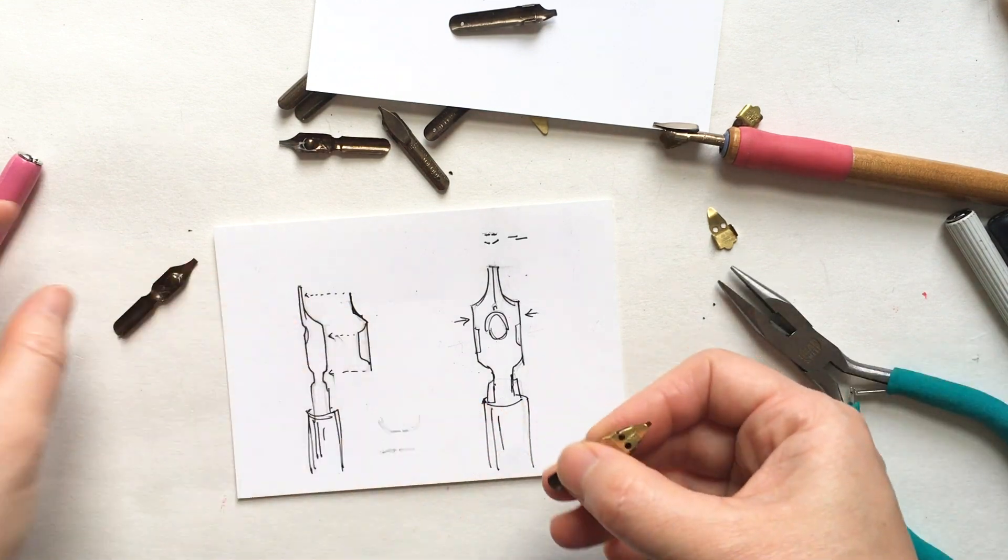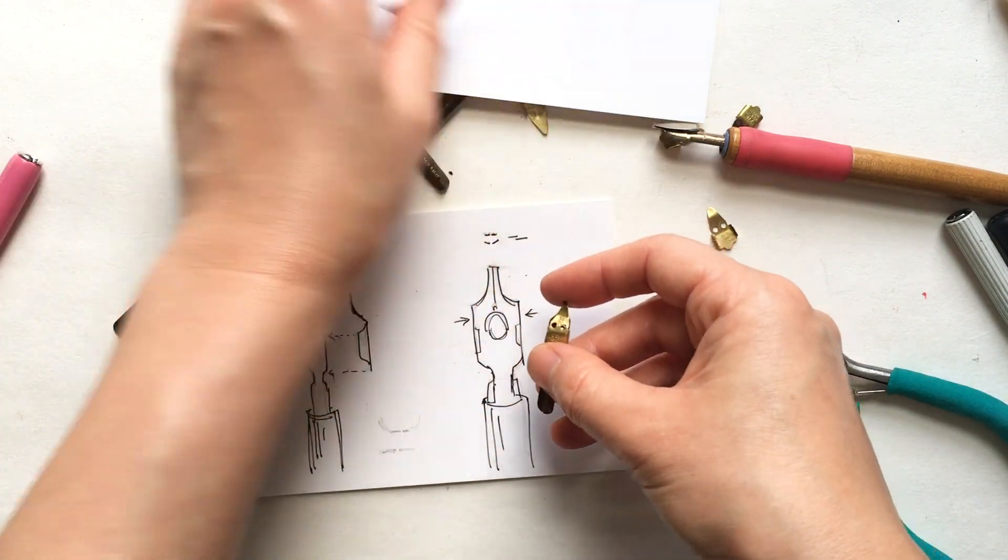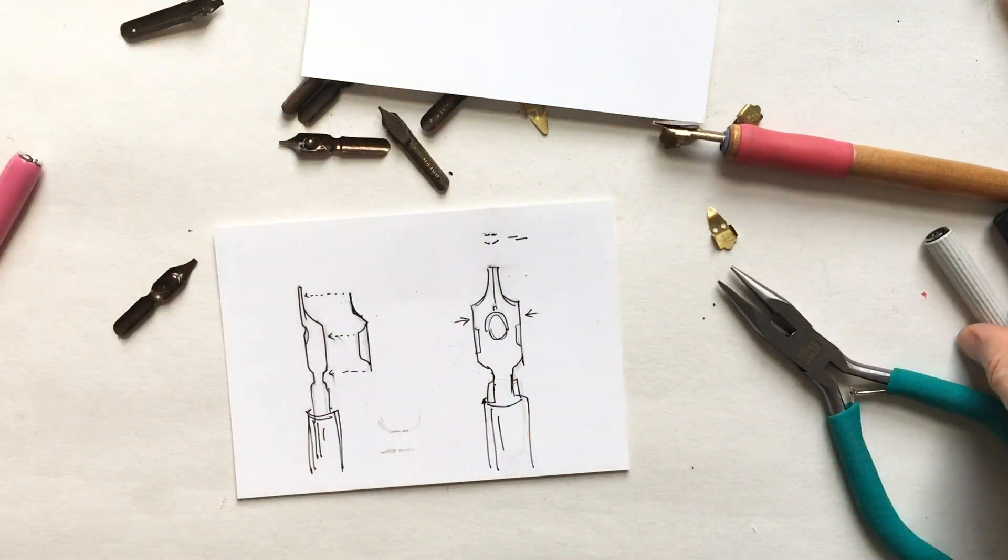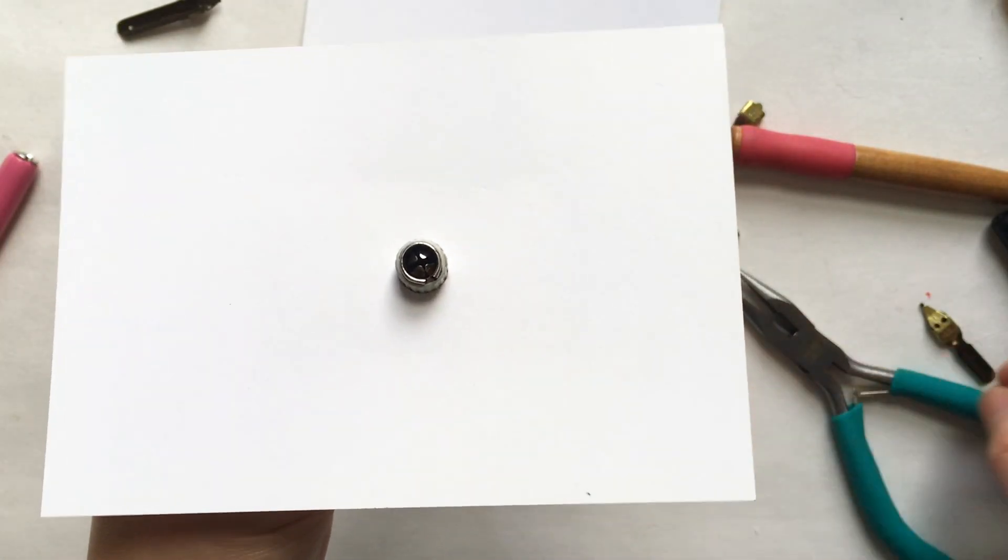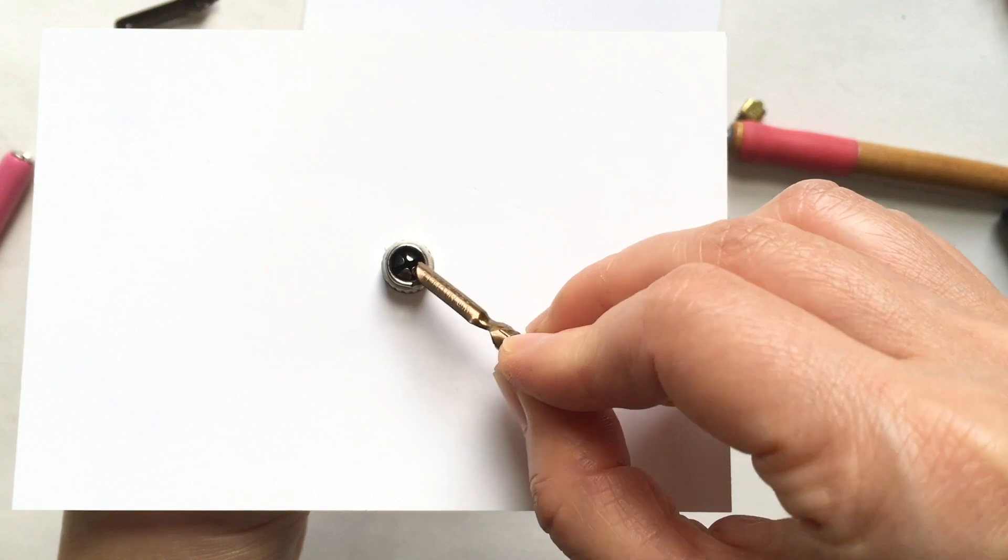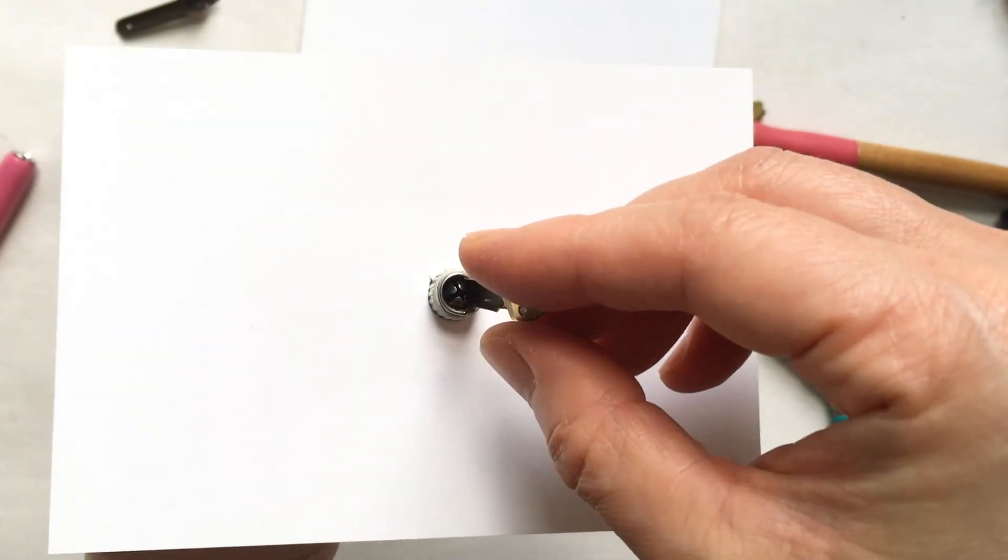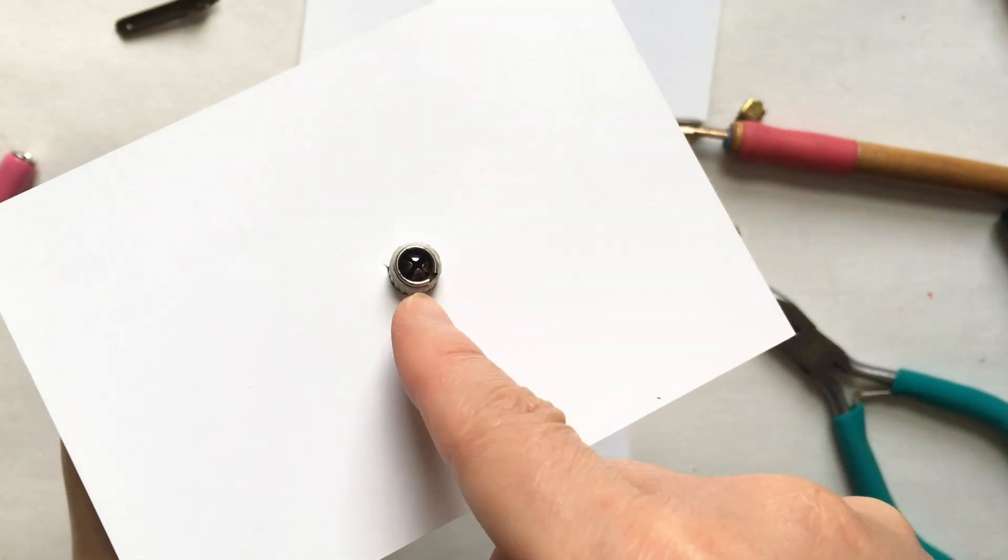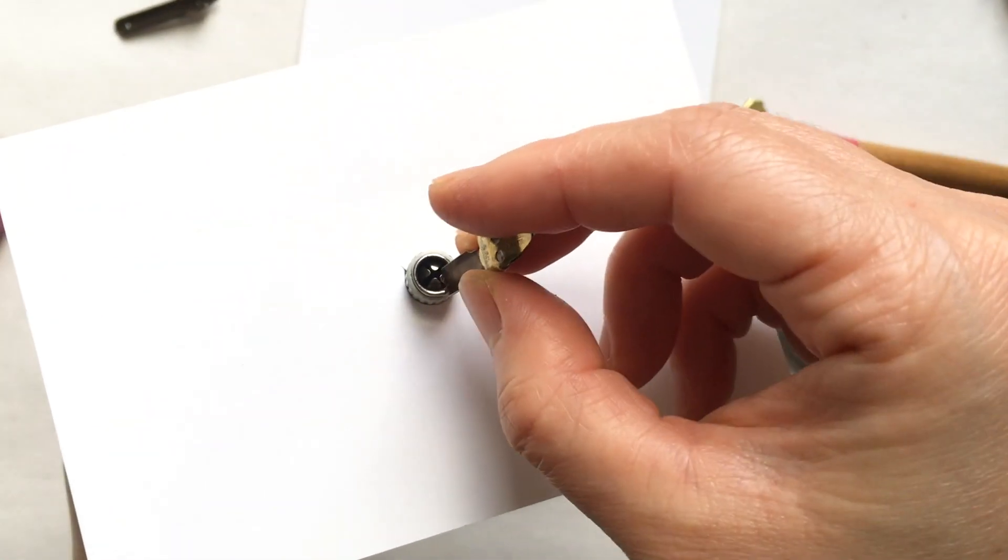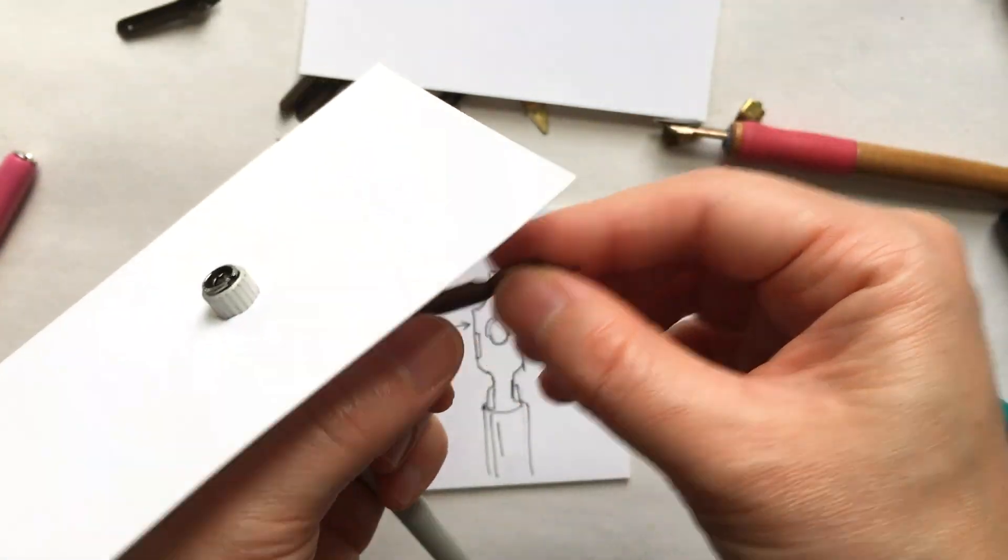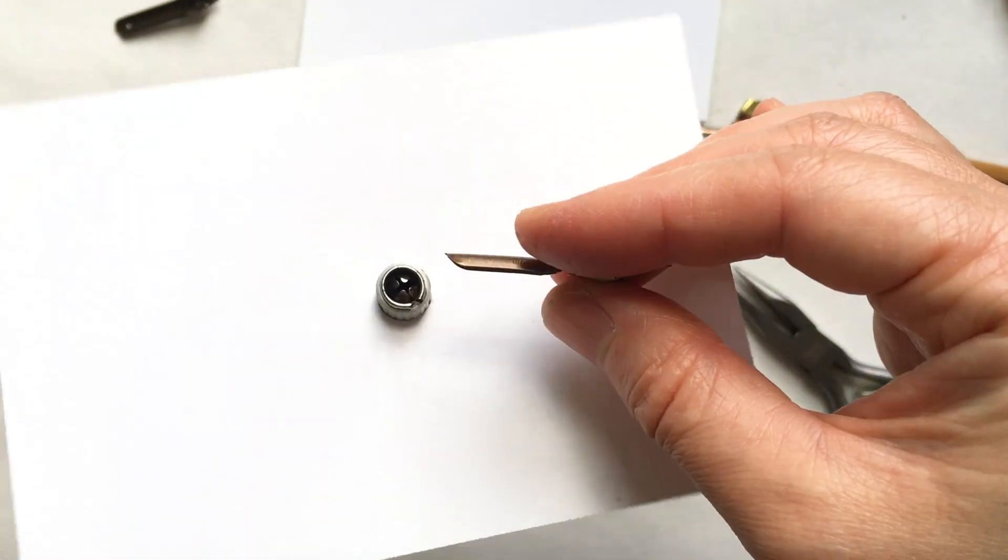As far as putting the nibs onto the pen, it's quite simple. Most of the pen holders look like this with the outer ring and then the four prongs in the middle. So you just want to stick the nib in between the prongs and the ring.